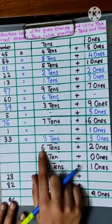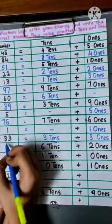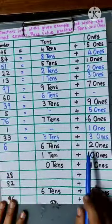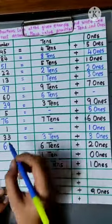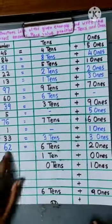Here there is 6 tens plus 2 ones. 6 tens means first we will write 6, and 2 ones means we have to write 2. The number is 62.